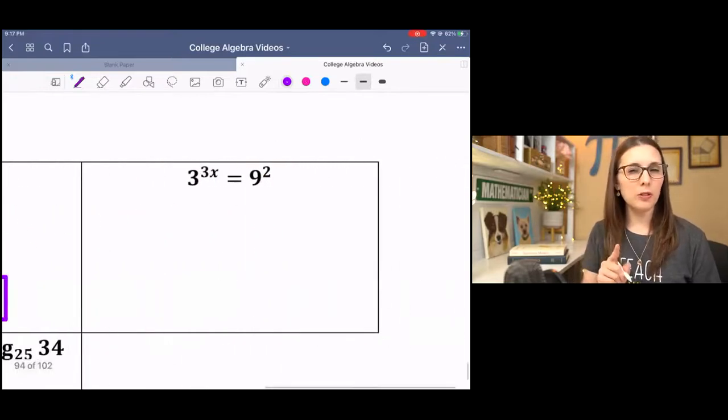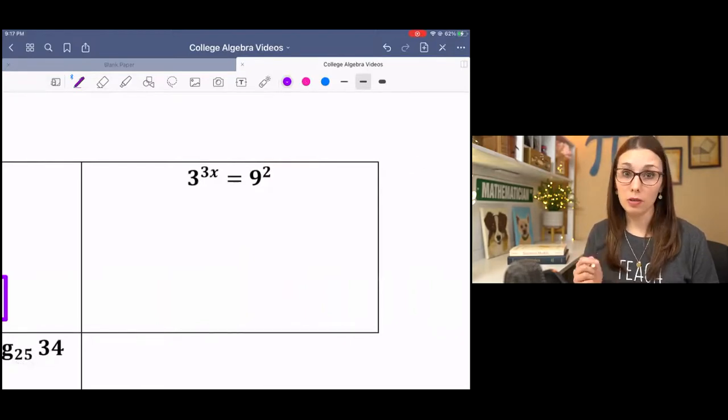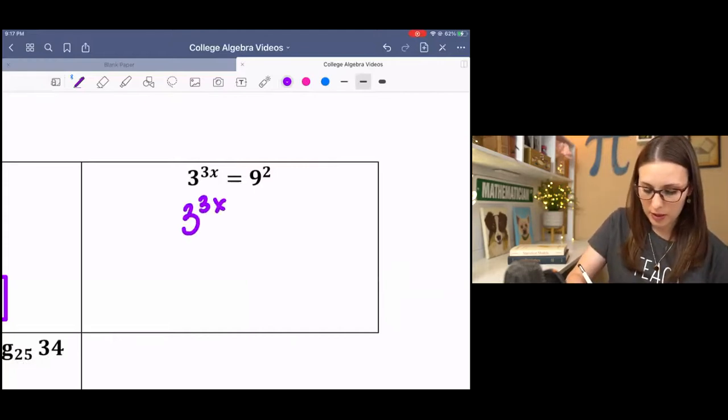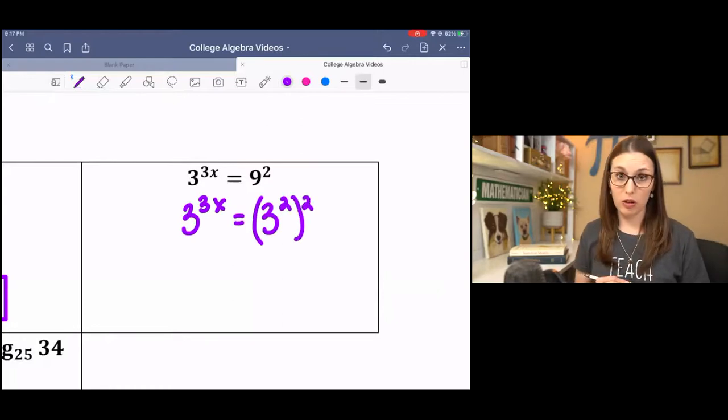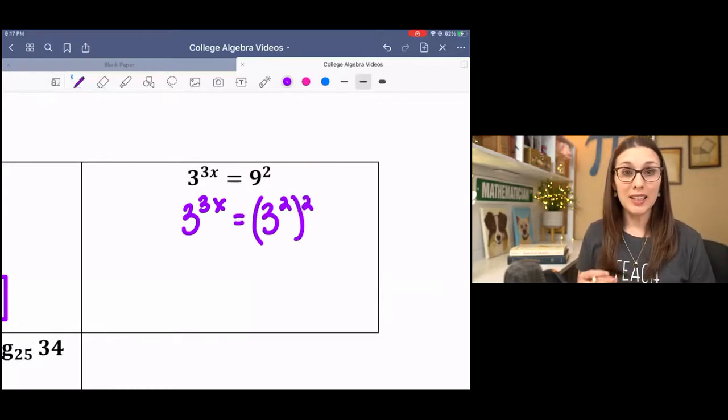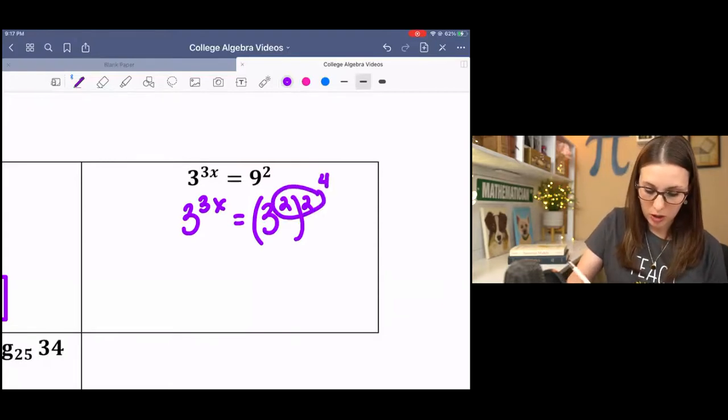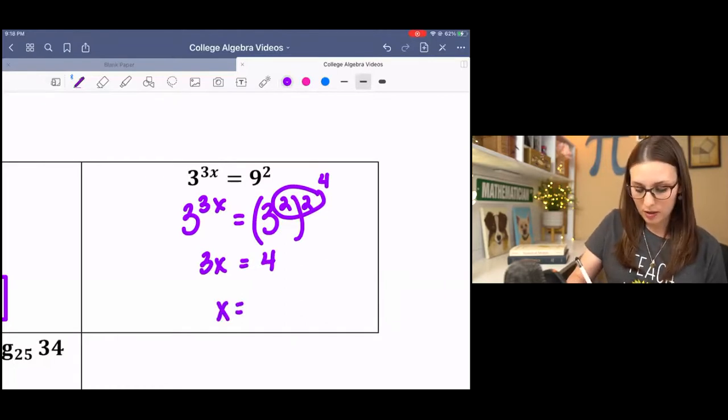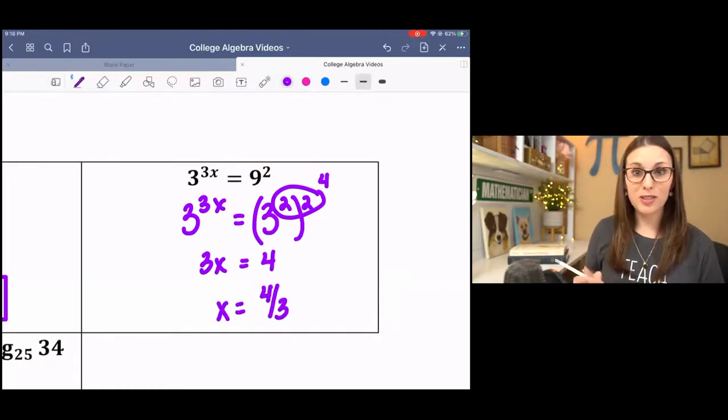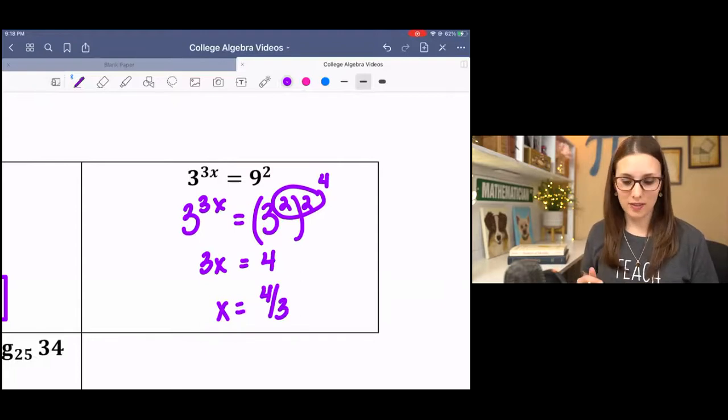In the next example, it's a little different. You might notice that we don't have the same base. But 9 can be written with a base of 3. I'm going to leave this as a base of 3. I'm going to rewrite this as a base of 3. 9 is 3 squared. Then we can use our properties of exponents. 2 times 2 is 4. So what we have is 3x equals 4, which makes x 4 thirds. And that's all. I love when they have the same base.